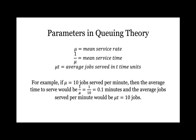Another basic parameter in queuing theory is the service rate. Mu is the mean service rate, 1 over mu is the mean service time, and mu times t equals the average jobs served per t time units. For example, if mu equals 10 jobs served per minute, then the average time to serve a job would be 1 over mu, which is 0.1 minutes, and the average jobs served per minute would be mu times t, 10 jobs per minute.